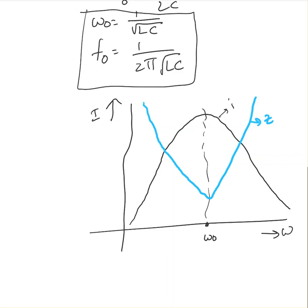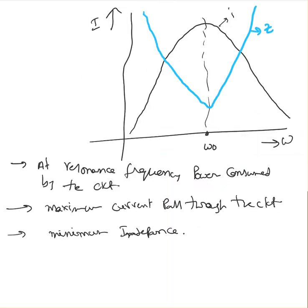Since the current is maximum at resonant frequency, power is also going to be maximum. At resonant frequency in an RLC series circuit, power consumed by the circuit is maximum, current is maximum, and impedance is minimum.